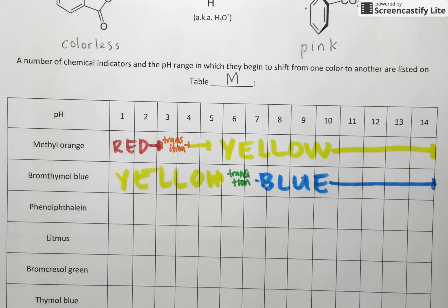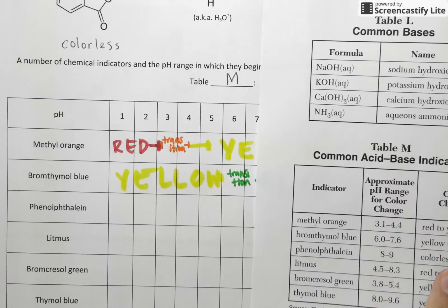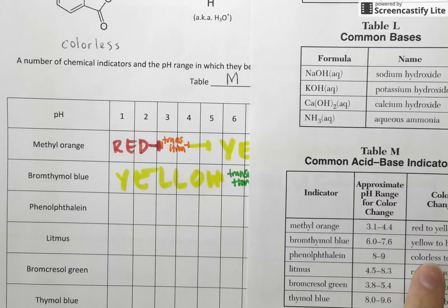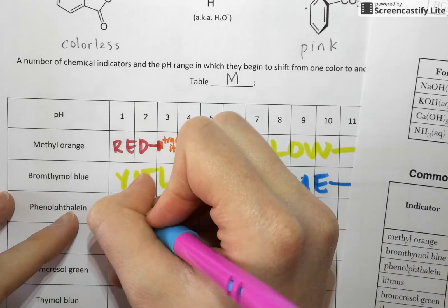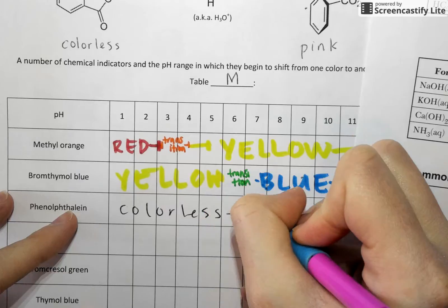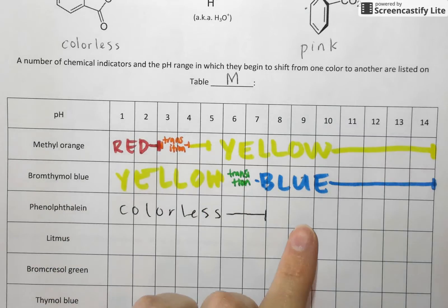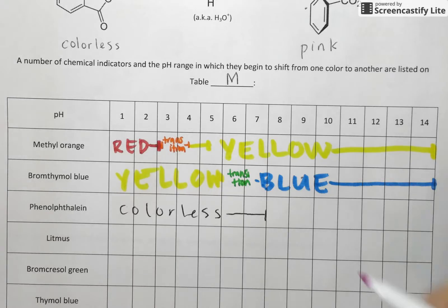We can use the same rules to help us figure out again for phenolphthalein when it will change colors. Any pH below 8 is going to show up with the color on the left. So 8 and below phenolphthalein is completely colorless. Just looks, when you add it, it looks like water. It starts to transition between pH 8 and 9 and it transitions to a hot pink color.